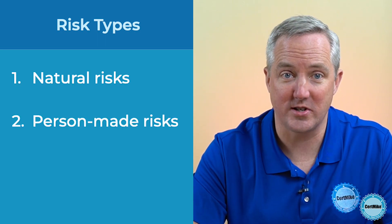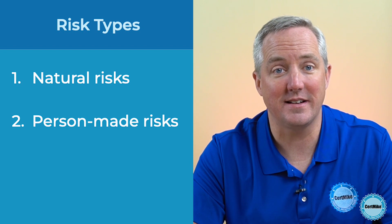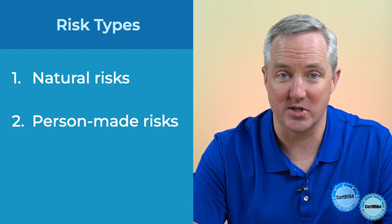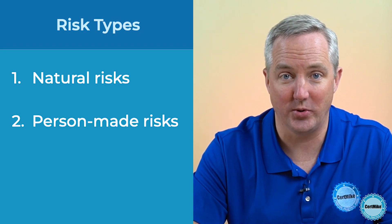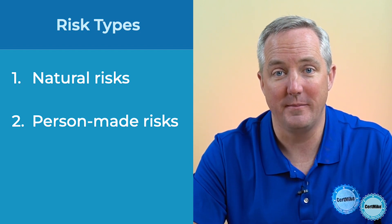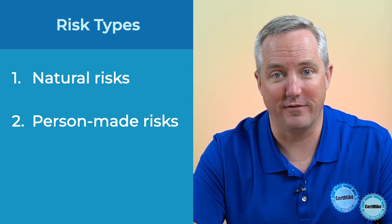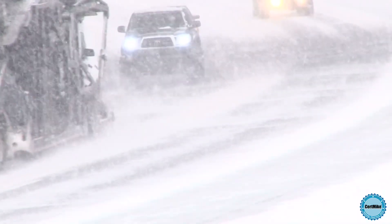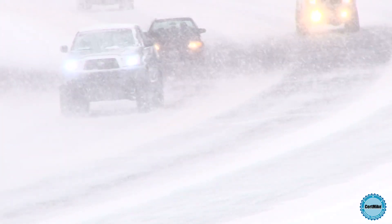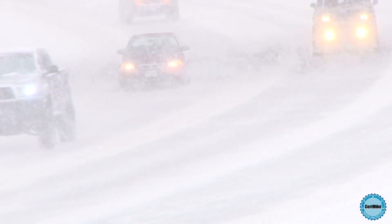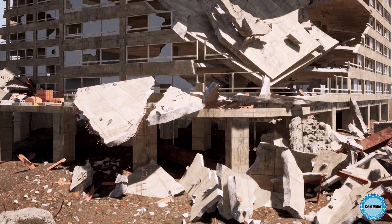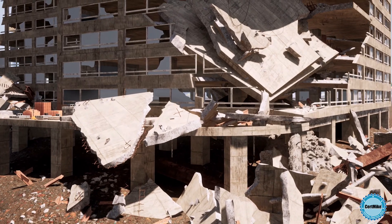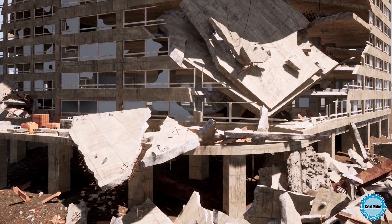Natural risks include anything that happens as a result of the natural environment — everything from weather events like a blizzard, tornado, or lightning strike, to a movement of the earth such as an earthquake or volcanic eruption.